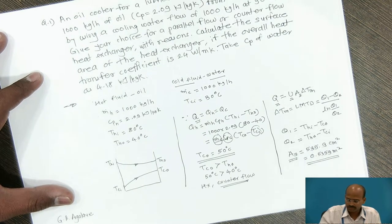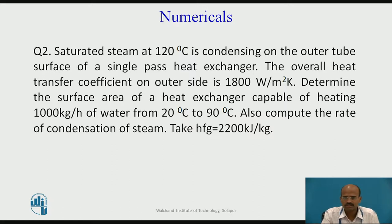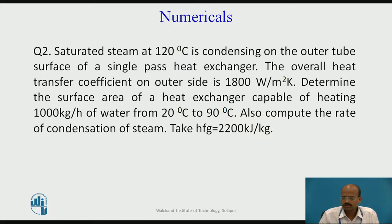Now we will see the second numerical. Saturated steam at 120°C is condensing on the outer tube surface of a single pass heat exchanger. The overall heat transfer coefficient on the outer side is 1800 W/m²·K. Determine the surface area capable of heating 1000 kg per hour of water from 20°C to 90°C. Also compute the rate of condensation of steam, given latent heat as 2200 kJ per kg.